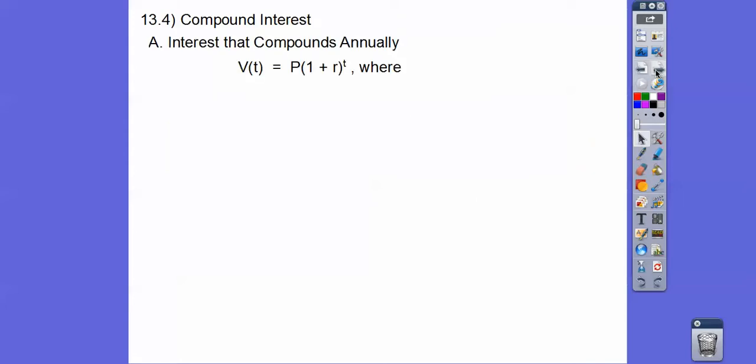So here's the first one. Interest that compounds annually, so basically once a year. And this is where most accounts are. This is where the stock market is and other investments. So V(t) is equal to P times (1 plus r) to the t. And V(t) is the ending value, so the ending principal. And then the time is in years. And the P is the principal, which is your initial amount that you invest.